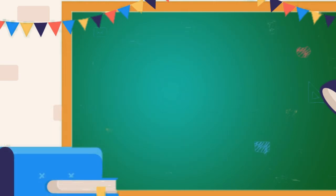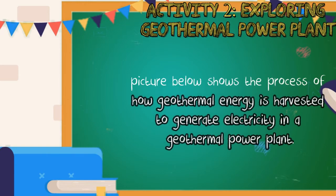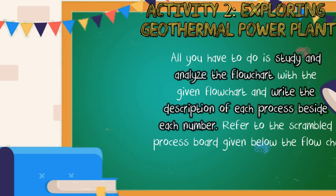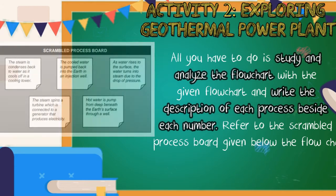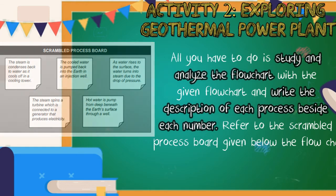For your next activity — 'What's More Activity 2' entitled Green Geothermal Power Plant — the picture below shows the process of how geothermal energy is harvested to generate electricity in a geothermal power plant. Study and analyze the flow chart and write the description of each process beside each number. Refer to the scrambled process board given below the flow chart.